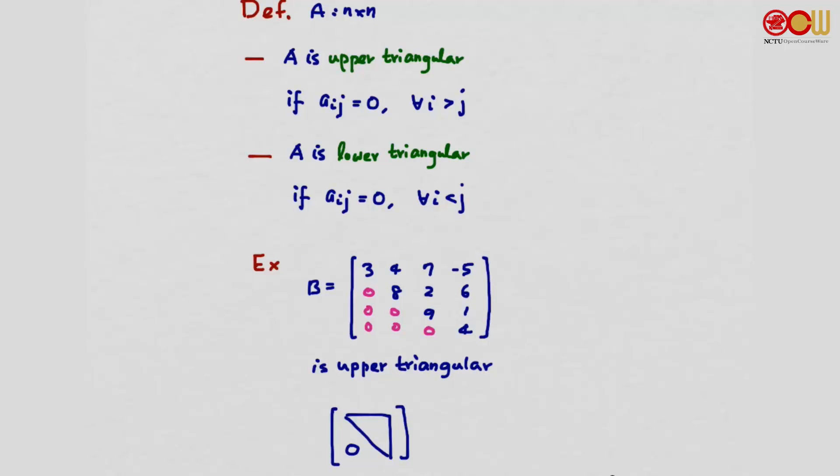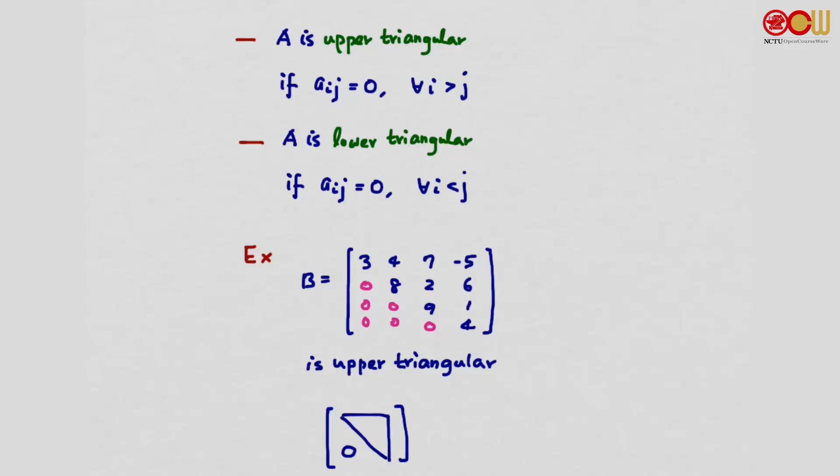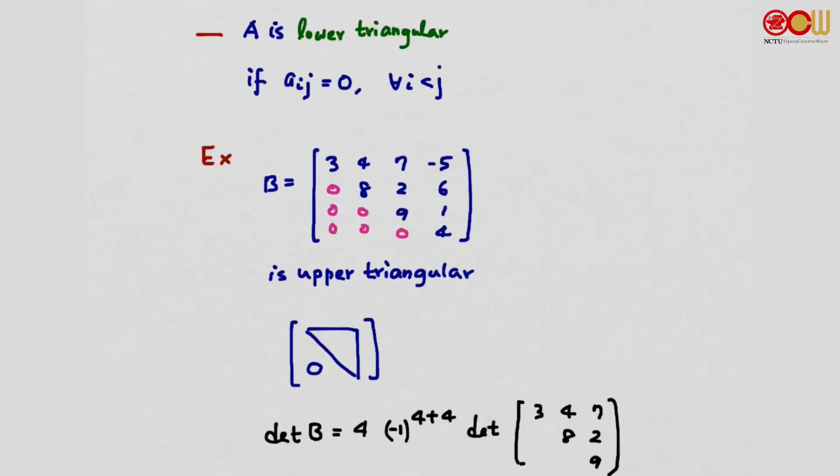Why do we talk about upper triangular and lower triangular matrices all of a sudden? Aren't we discussing determinants? That's right. Because these types of matrices have a very special property when it comes to determinants. Let's consider the determinant for this B matrix. If we want to do cofactor expansion and can freely choose any one of the four rows, which row would be a good idea to start with? The last one seems to be a good idea because all the other entries are 0, only this 4 is non-zero. If we start from this row, we will only have one non-zero term.